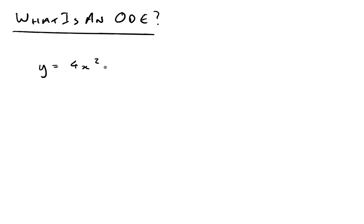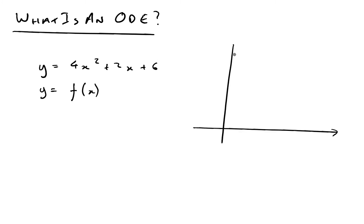So y equals 4x squared plus 2x plus 6. What variables have I got going on here? Well I've got a y, and that's equal to something on the right-hand side, and everything on the right-hand side is in terms of x. So in other words this is a function, a function in terms of x, and we write it like that. If I was to draw this on a graph, I'd only need two dimensions because I've got two variables. A graph is just showing how one variable changes with respect to another.